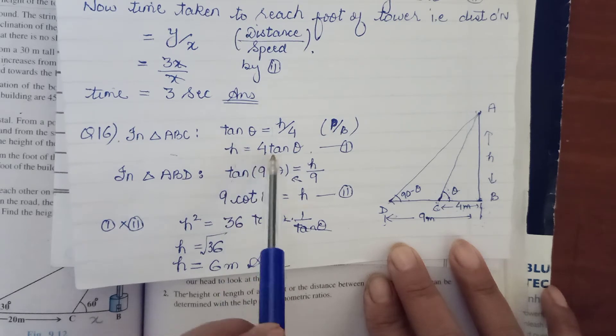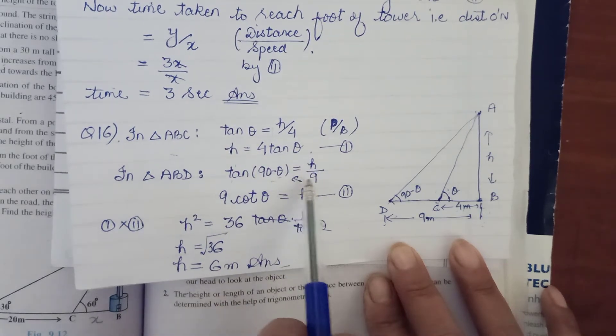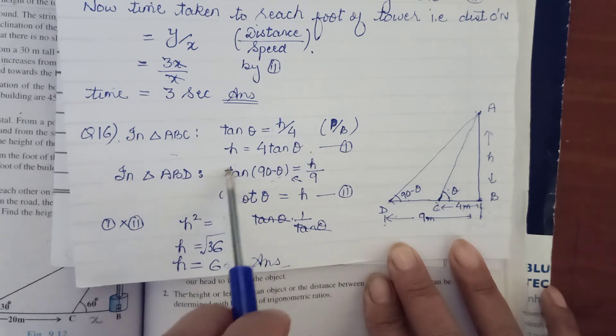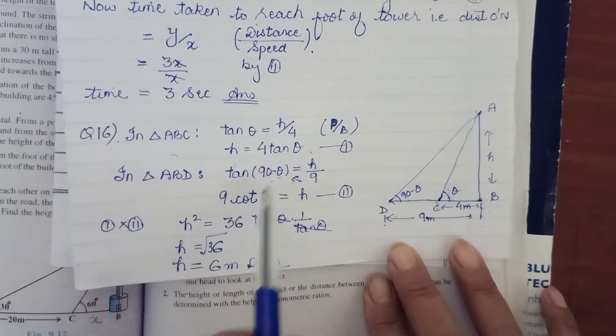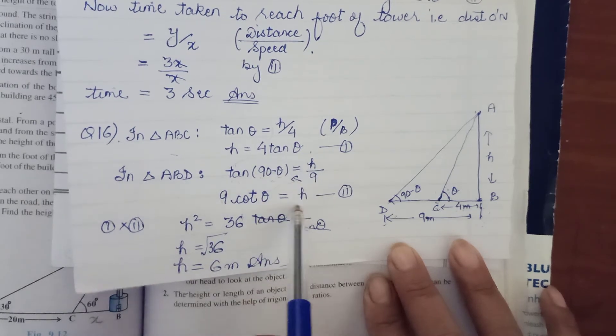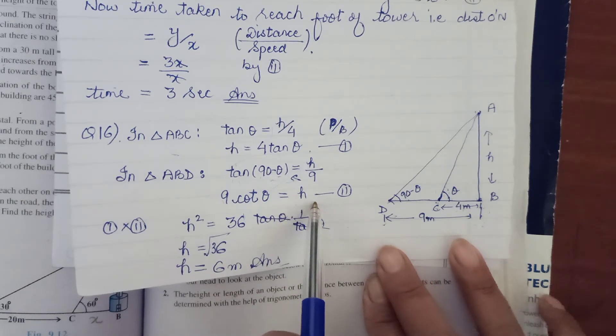Cross multiplying from here also. First cross multiplying, we got H as 4 tan theta. From here we are getting cross multiplying 9 tan 90 minus theta. Complementary angles we have studied. Tan 90 minus theta is cot theta. So from here we get 9 cot theta is equal to H.